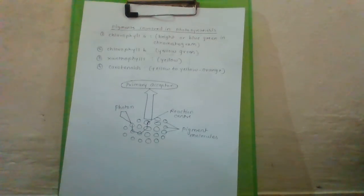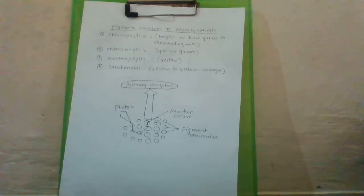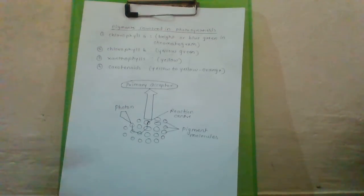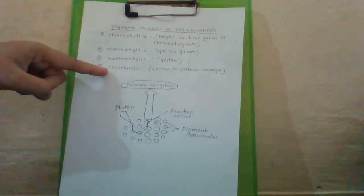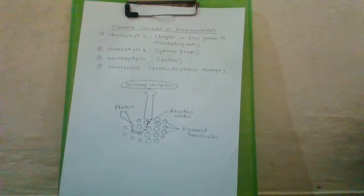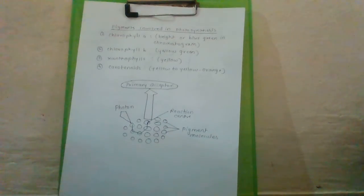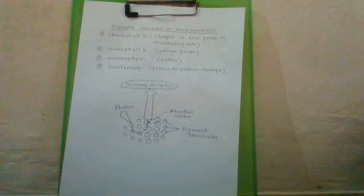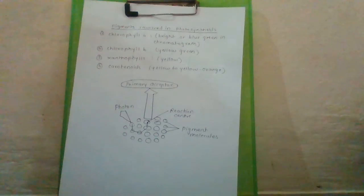In today's lecture we discussed the diagrammatic representation of the chloroplast, light reaction, dark reaction, and the pigments involved in photosynthesis. Chlorophyll A is responsible for the formation of the reaction center, while chlorophyll B, xanthophyll, and carotenoids are participants in the antenna system. The pigment molecules are aligned with protein molecules. Keep studying and enjoy the video. Thank you.